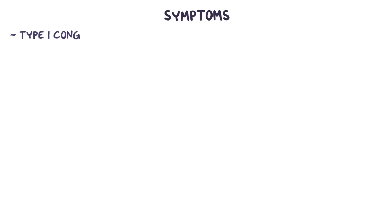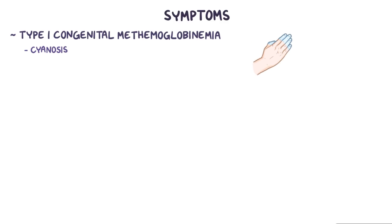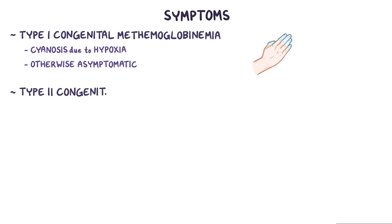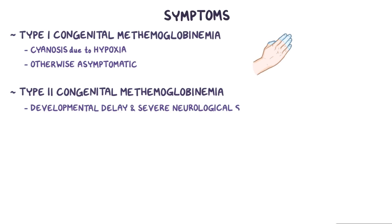Patients with type 1 congenital methemoglobinemia have cyanosis, which means that their skin takes on a bluish discoloration due to hypoxia, but are otherwise asymptomatic. However, type 2 congenital methemoglobinemia presents with developmental delay and severe neurological symptoms, which are usually fatal in the first year of life.